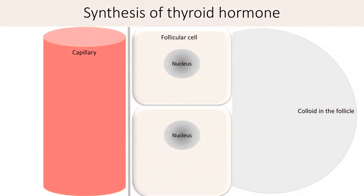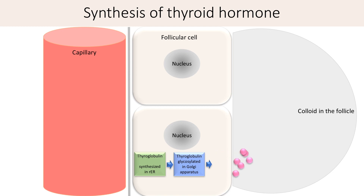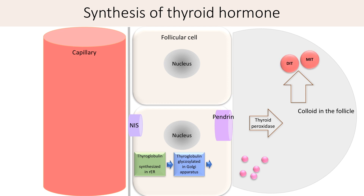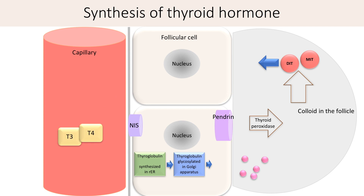This schematic diagram shows the secretion of thyroid hormone by the follicular cells. Thyroglobulin is synthesized in the rough endoplasmic reticulum of the follicular cell and glycosylated in the Golgi apparatus. It is packaged into vesicles and secreted into the lumen by exocytosis. Iodide from the capillary is transported to the follicular cytoplasm through the sodium-iodine symporter and then into the lumen of the follicle through pendrin. Thyroid peroxidase on the surface of follicular cells oxidizes this iodide into active iodine. One or two atoms of active iodine combine with tyrosine in the thyroglobulin to form monoiodotyrosine or diiodotyrosine, which then combine variably to form T3 and T4. On stimulation by TSH, the follicular cells uptake T3 and T4 from the colloid and transport it to the capillaries.